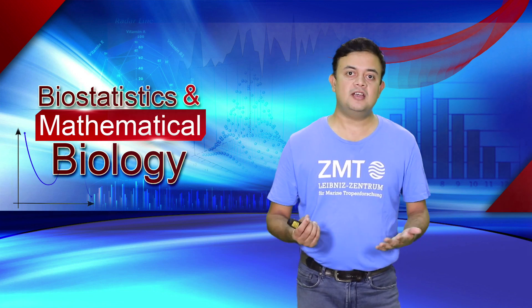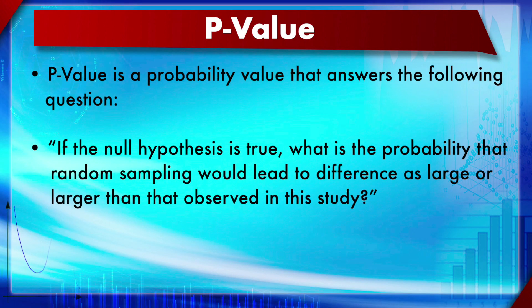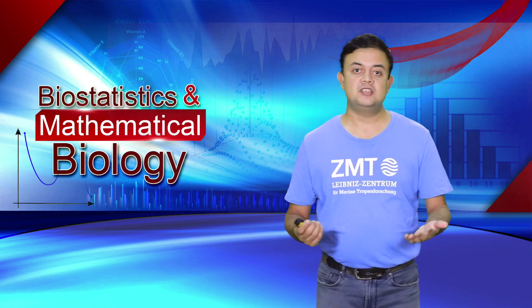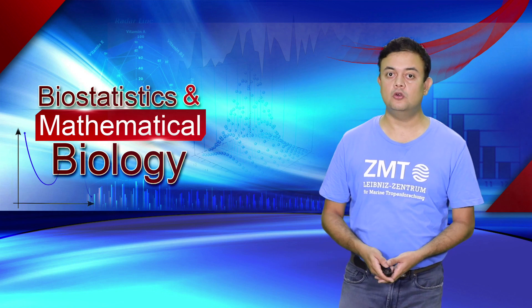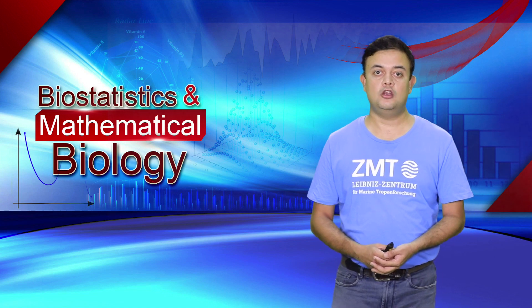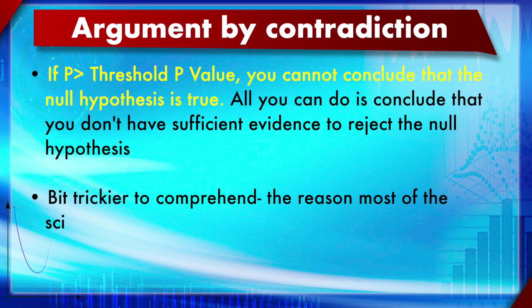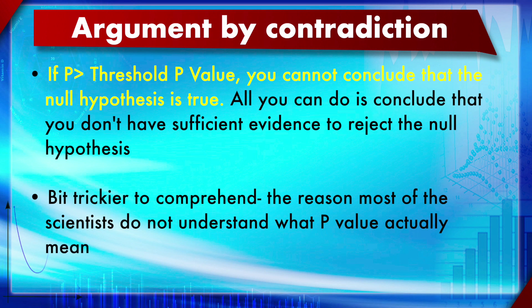The p-value is a probability value that answers: if the null hypothesis is true, what is the probability that random sampling would produce differences as large as or larger than what is observed? If the p-value is higher than 0.05, you cannot conclude the null hypothesis is true — all you can do is conclude there is insufficient evidence to reject it. This is an argument by contradiction in logic.